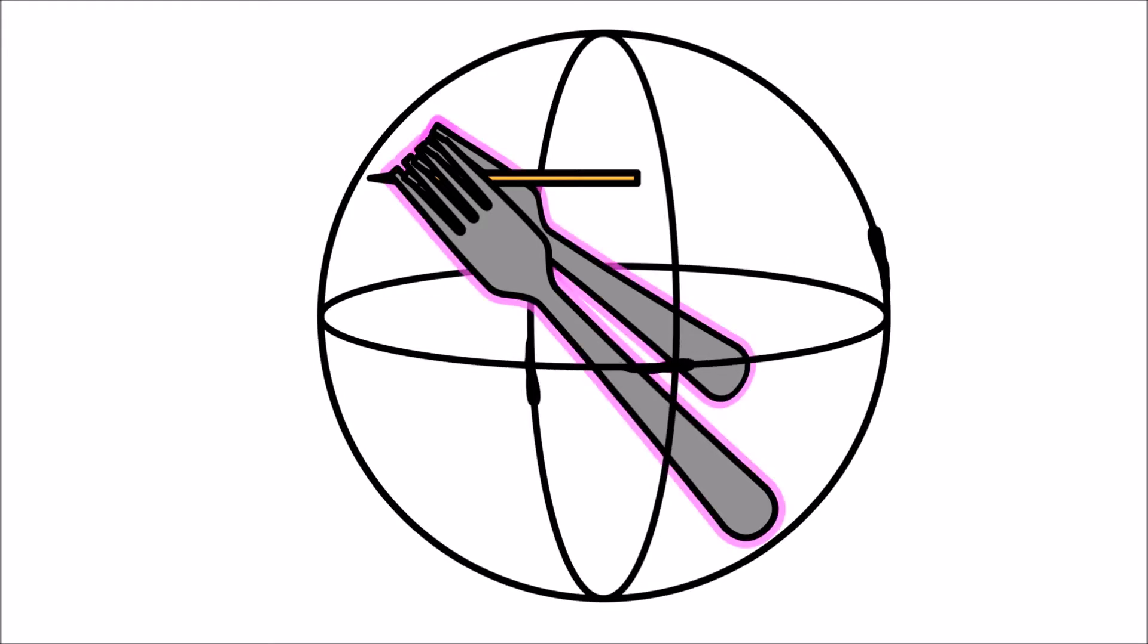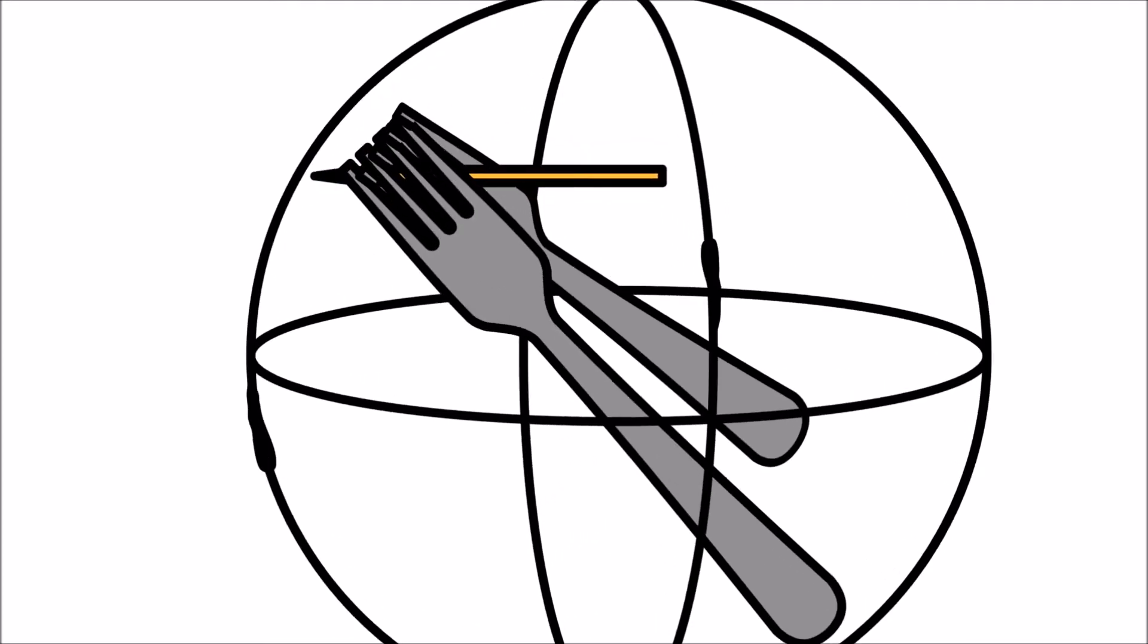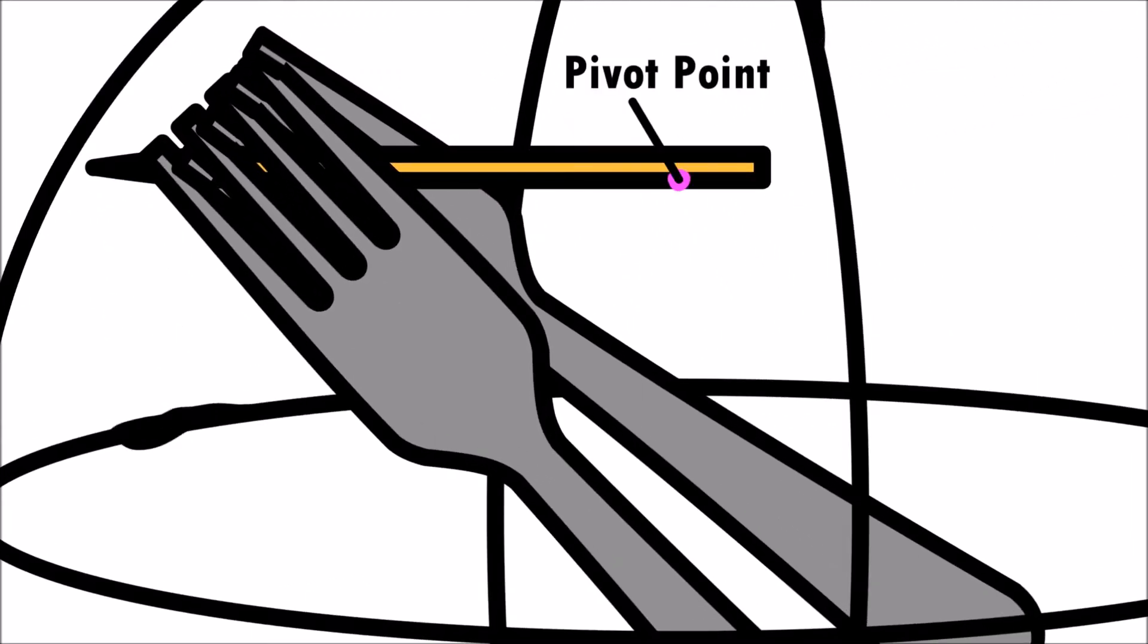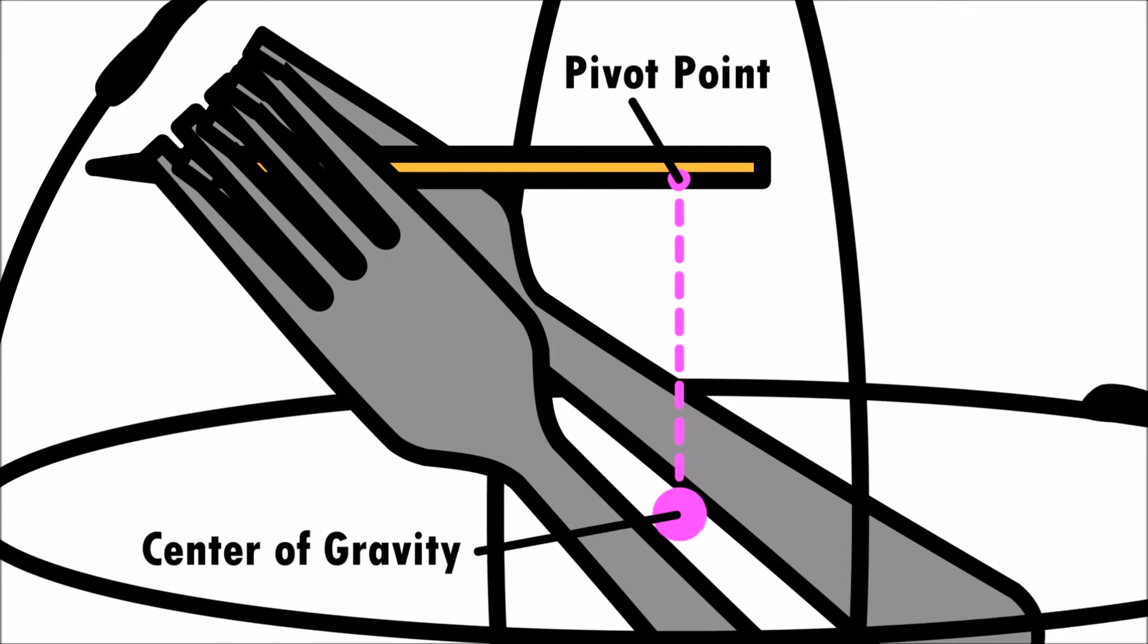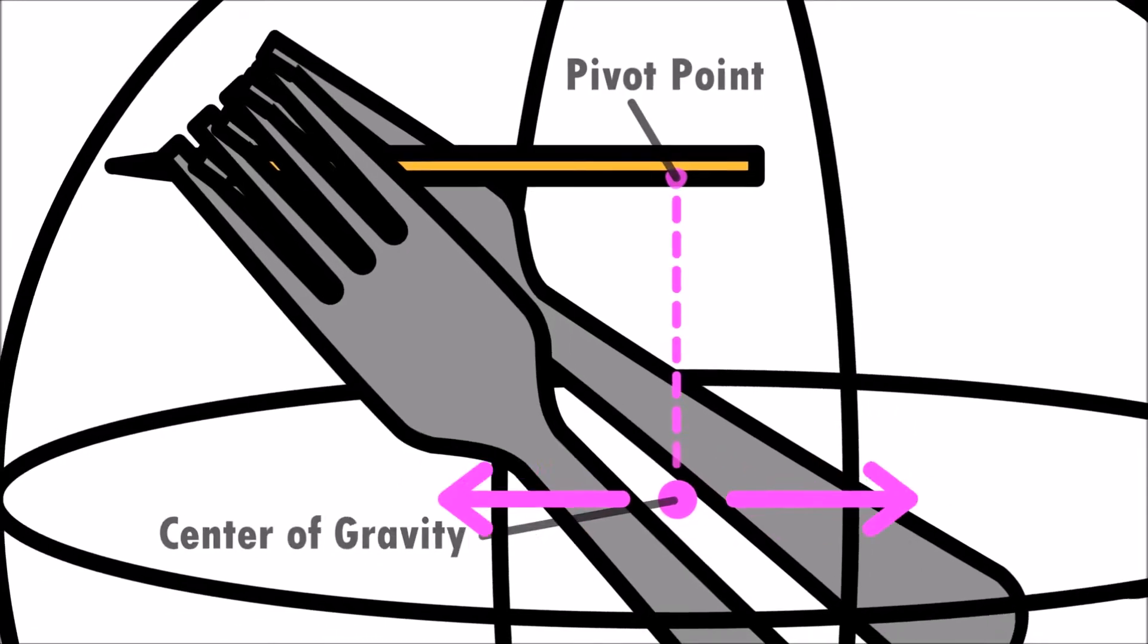The forks are curved downwards below the toothpick. As a result, the center of gravity lies below the pivot point where the weight is actually evenly distributed.